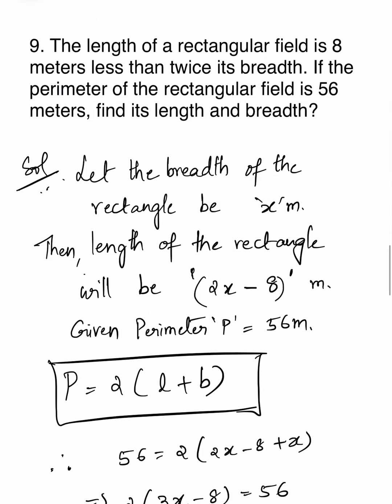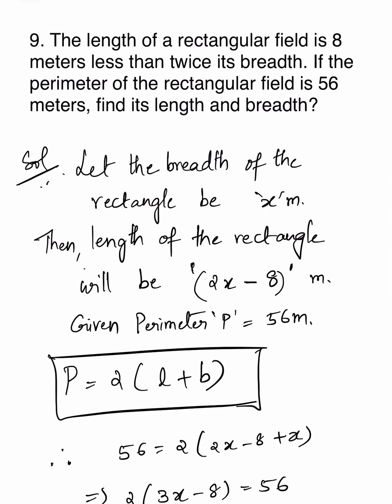Question 9: The length of a rectangular field is 8 meters less than twice its breadth. If the perimeter of the rectangular field is 56 meters, find its length and breadth. Let the breadth of the rectangle be x meters. Therefore, the length will be 2x minus 8. Why? It is given that the length is 8 meters less than twice its breadth. Twice the breadth is 2x, and 8 meters less than that is 2x minus 8.